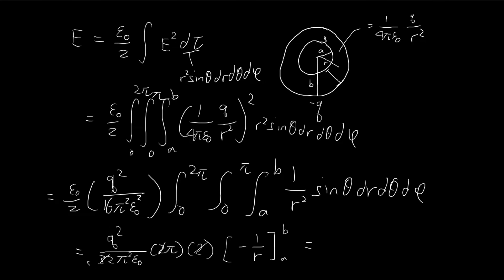So this is 4, right? So this becomes 8. So we have q squared, there's also pi, it goes away. So q squared divided by 8 pi epsilon, negative 1 over b plus 1 over a. So this is the answer.